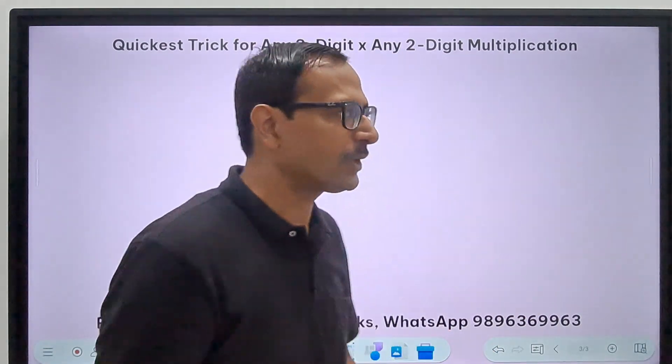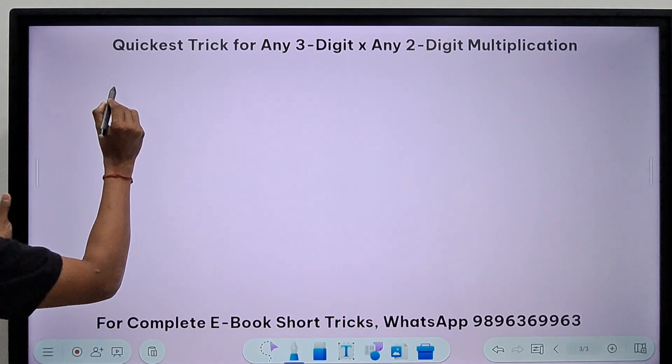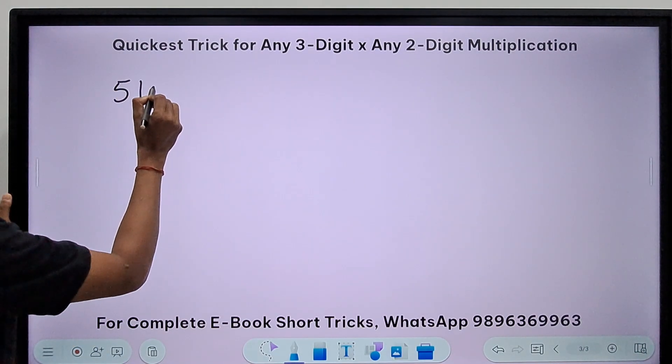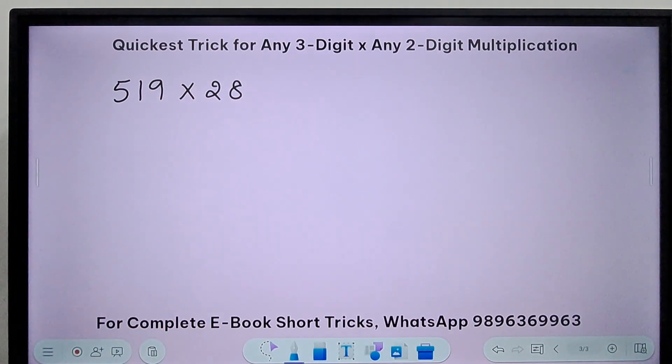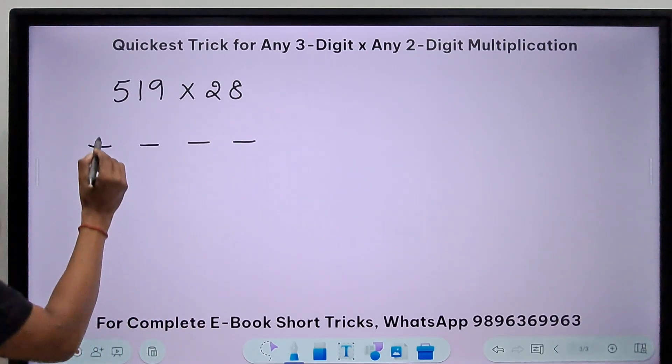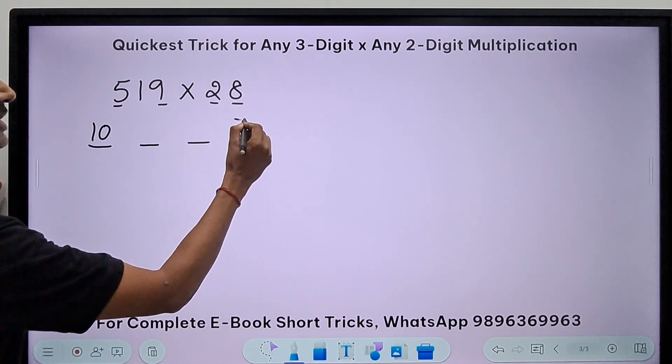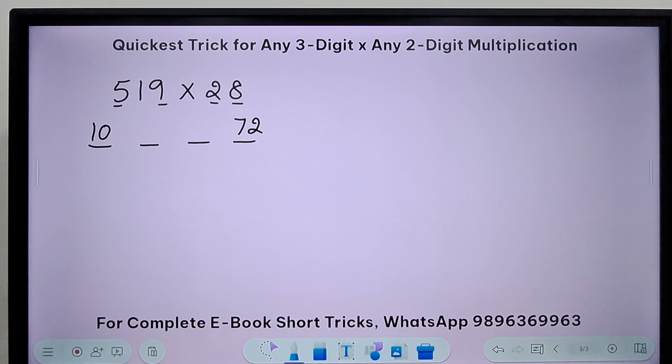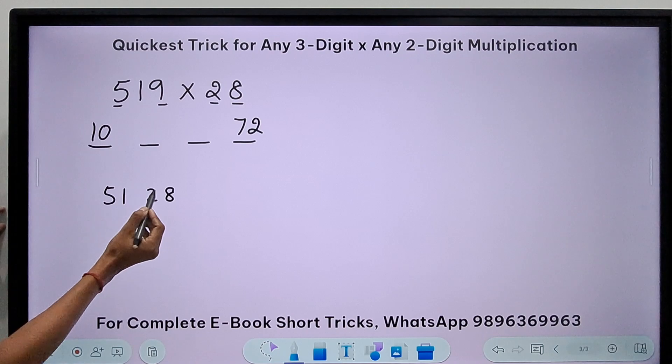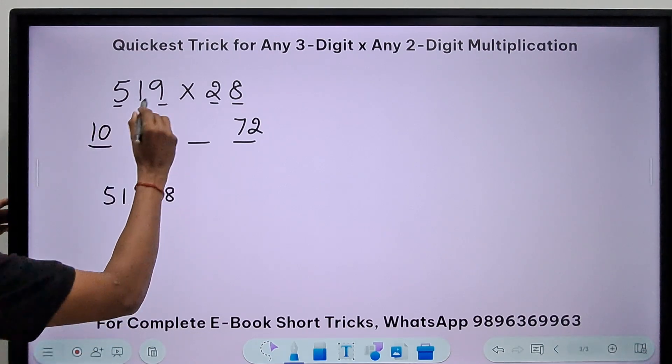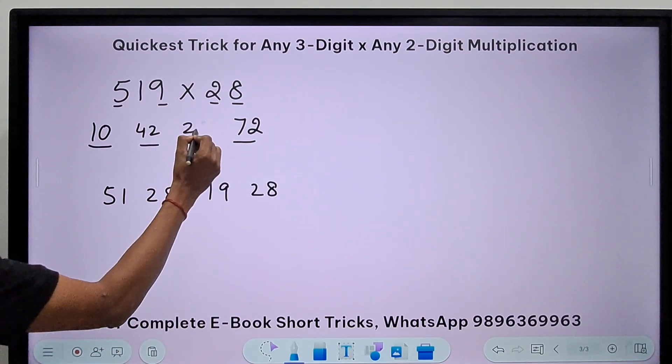Any two-digit number and any three-digit number can be multiplied very quickly. Let's see two more questions and then we will go back to the first slide. Now I'm going to skip some more steps. Let's take the example of 519 multiplied by 28. The four numbers I require are first and first, last and last—8 times 9 is 72.